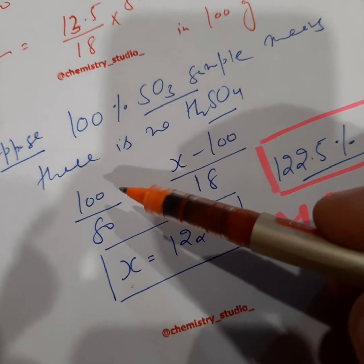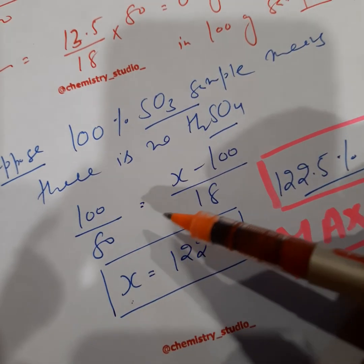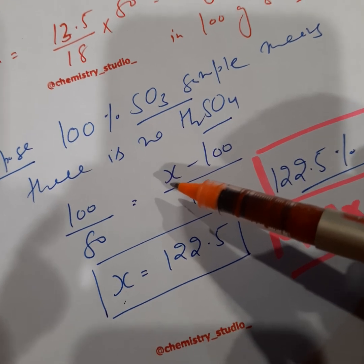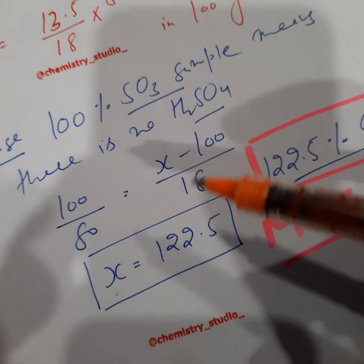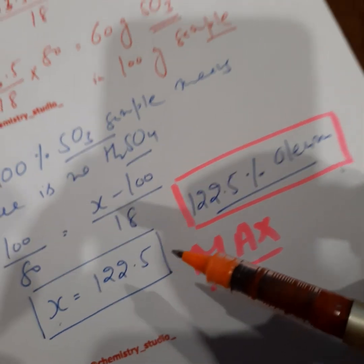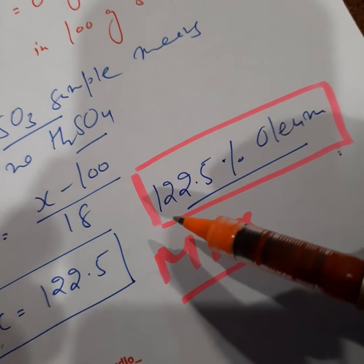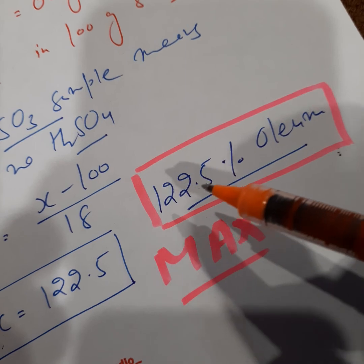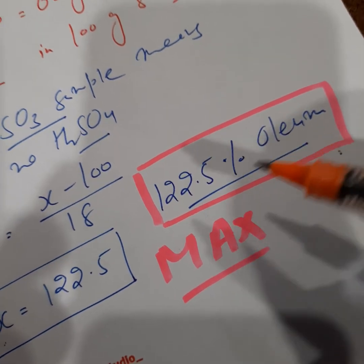So applying the same concept and formula, 100 by 80 is equal to X, let it be the strength finally, minus 100 by 18. I am calculating it to be 122.5. It means that the maximum representation in this manner can be 122.5% oleum. Not more than that.